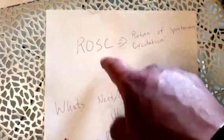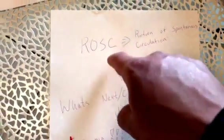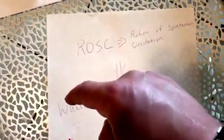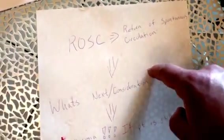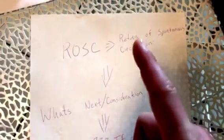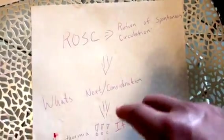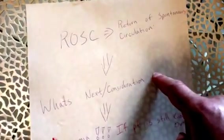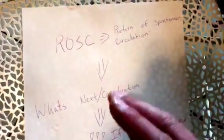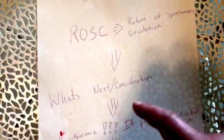But anyways, so Return of Spontaneous Circulation. I've already made a video on this, so if you have no idea what this is, I would go back to that video and then come back to this. And I'm only going over one consideration, one thing that both BLS and ALS providers can do for this patient out in the field. Obviously go through protocol and all that stuff. But one thing you can do that has been proven to help the patient outcome.